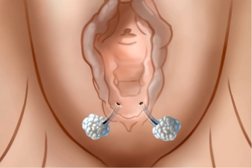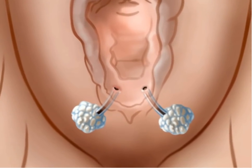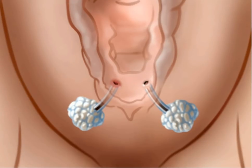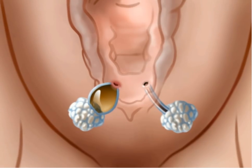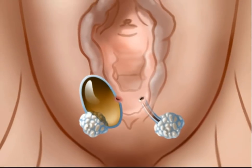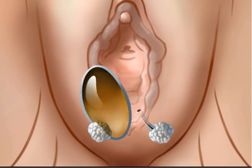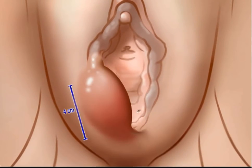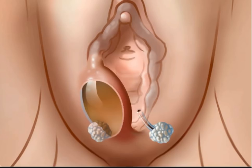These glands produce mucus, and following trauma or infection, either duct may swell and obstruct to form a cyst. Bartholin duct cysts typically measure 1 to 4 centimeters in diameter and are most commonly asymptomatic. Patients with larger cysts, however, may complain of vaginal pressure or dyspareunia. If infected, an abscess may form rapidly within the duct and produce significant pain.